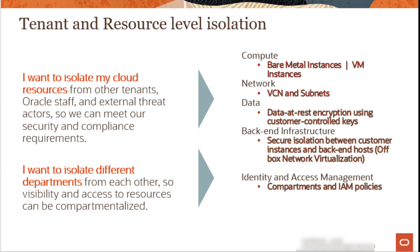All data within Oracle Cloud Infrastructure is encrypted at rest and in transit. Customers can bring their own keys for client-side encryption, or use Oracle-provided keys to manage encryption. On the backend infrastructure side, there is secure isolation between customer instances and the backend host, and this is achieved using off-box network virtualization. Off-box network virtualization takes features usually implemented in a hypervisor — such as management and IO functions — and implements them in a separate physical hardware device.